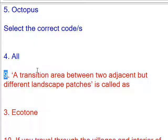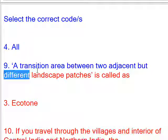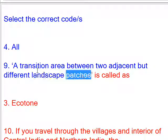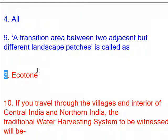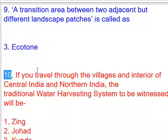A transition area between two adjacent but different landscape patches is called an ecotone.